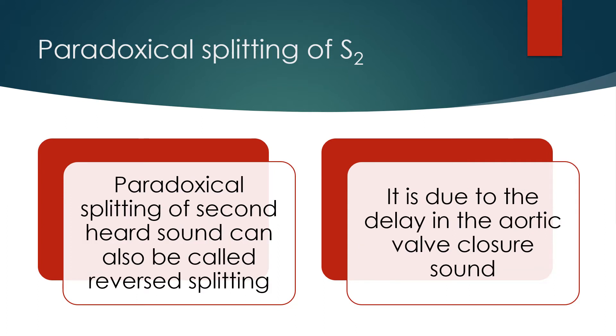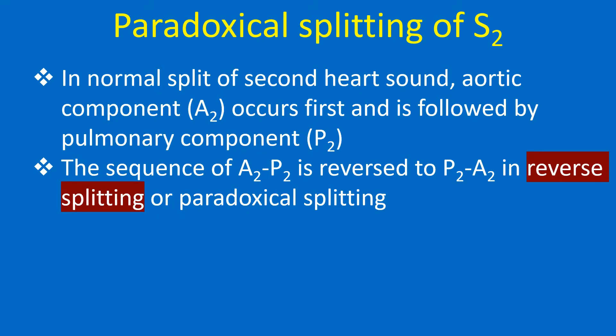Paradoxical splitting of the second heart sound can also be called reverse splitting. It is due to the delay in aortic valve closure sound. In normal splitting, the aortic component occurs first and is followed by the pulmonary component. The sequence of A2P2 is reversed to P2A2 in reverse or paradoxical splitting.